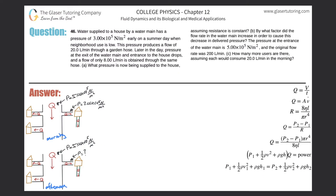Number 46. Water supplied to a house by a water main has a pressure of 3 times 10 to the 5 newtons per square meter early on a summer day when neighborhood use is low. The pressure produces a flow of 20 liters per minute through a garden hose. Later in the day the pressure at the exit of the water main and entrance to the house drops, and a flow of only 8 liters per minute is obtained through the same hose.